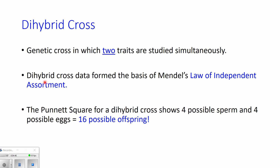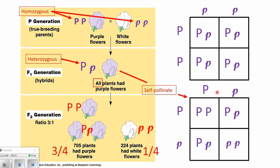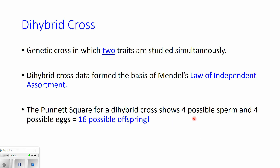The data from Mendel's dihybrid cross experiments formed the basis of one of the most important genetic laws: Mendel's law of independent assortment. We're going to talk about what that is, what it says, and what it means. We're also going to learn how to set up and do a Punnett square for a dihybrid cross. In a monohybrid cross there are two possible sperm, two possible eggs, and therefore only four possible offspring. But in a dihybrid cross there are four possible sperm, four possible eggs, and therefore 16 possible offspring. So it's going to be a larger Punnett square — instead of two-by-two, it's going to be four-by-four.